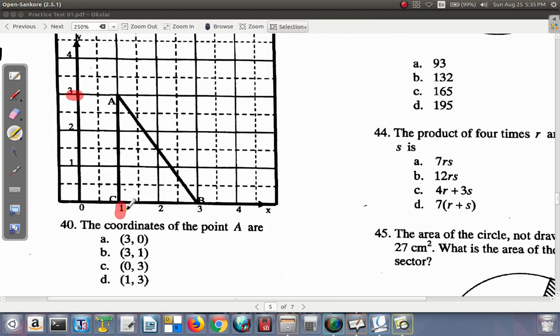You can see it's above 1 and beside 3. So X is 1, Y is 3. So that suggests the coordinates would be 1, 3. So question 40 seems like D. So question 40, D.